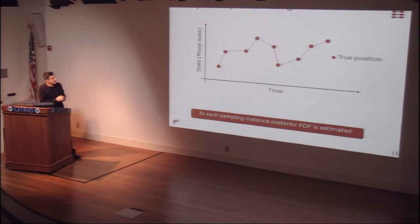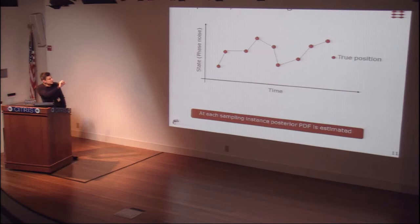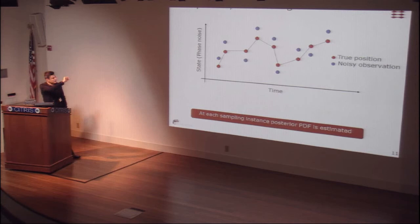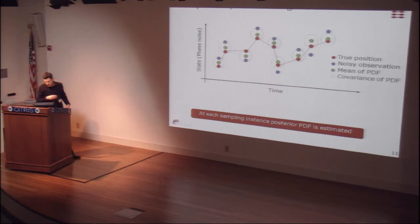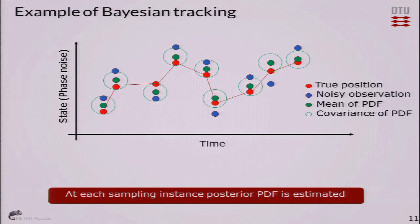The states can be defined as something like a PMD vector or phase noise. This is a trajectory of phase noise: red circles correspond to samples at some instance in time, and these are the noisy observations. At each sampling point we create a posterior PDF, and from this posterior PDF we infer the mean and the covariance. The green circle is much closer to the true position than the blue one — in this way you are actually filtering the noise. That's why it's called Bayesian filtering.